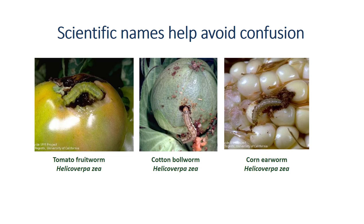In the case of the corn earworm, tomato fruitworm, and cotton bollworm, the scientific name is Helicoverpa zea. The first word, Helicoverpa, is the genus or generic name, and it is capitalized. The second word, zea, is the specific name or specific epithet, and it is not capitalized. The genus and specific epithet combined form the species name. Both words are italicized or underlined and are in Latin, so scientists can understand what plant or animal others are referring to, regardless of language.